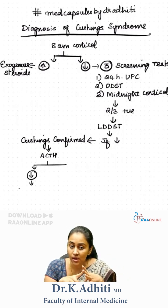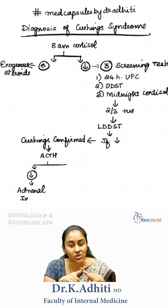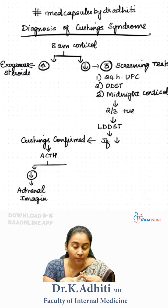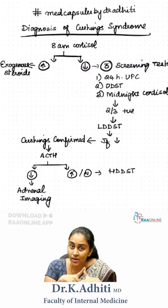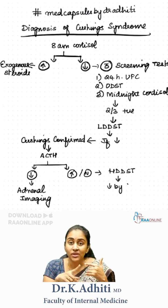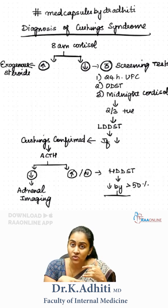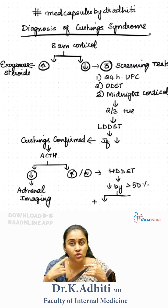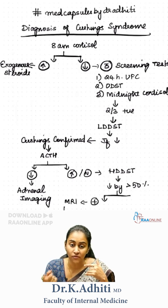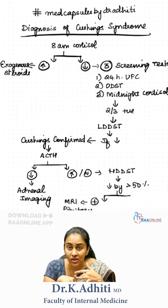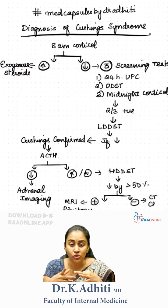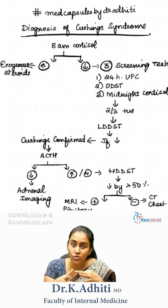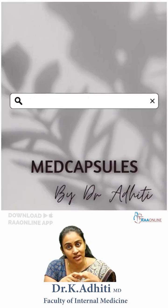If ACTH is suppressed, that means we need to image the adrenals. But if ACTH is not suppressed, that means we will have to do a high dose dexamethasone suppression test to determine if we need to image the pituitary or if we need to look for ectopic ACTH secretion. If it is suppressed, we do MRI pituitary. If it is not suppressed, then we will have to do a CT chest to look for a source of ectopic ACTH secretion.